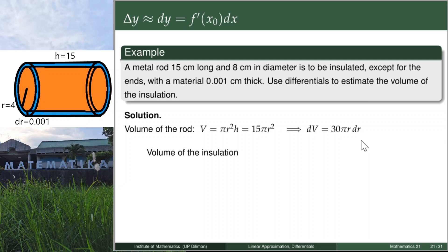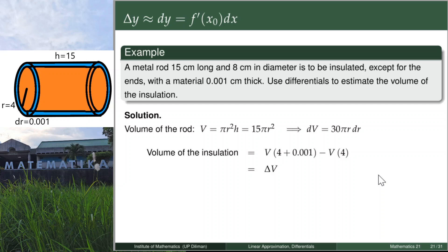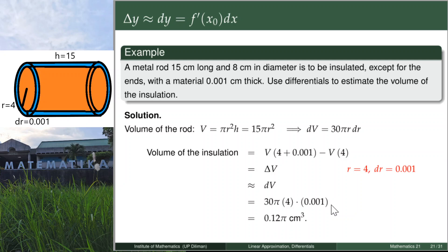The bigger cylinder has radius 4 + 0.001, while the smaller cylinder has radius 4. Since this is a change in volume, it's delta V, approximated by dV. Using r = 4 and dr = 0.001, we plug into 30π r dr and get the answer: the volume of insulation is 0.12π cubic centimeters. Make sure to write the units.